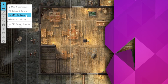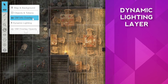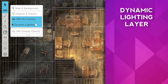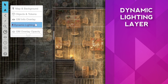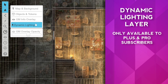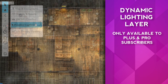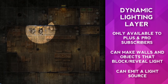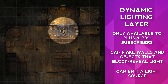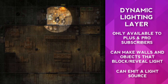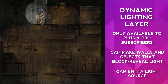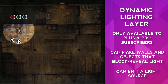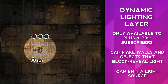The final layer is the dynamic lighting layer, which is only available to Plus and Pro subscribers. On this layer, you can draw lines and shapes to indicate walls or obstacles. You can create small tokens that emit a light source and create a small campfire. We will get more into dynamic lighting in another video.